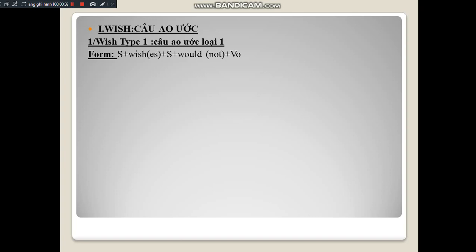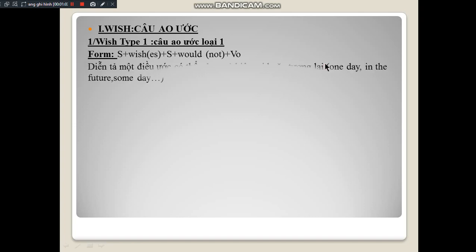Now look at the formula. Subject + wish + subject + would + verb (bare infinitive). In this formula, you can see there are two subject positions. The subject in the second clause can be the same as the first clause or a different subject. Type 1 wish clauses express a wish that could happen in the present or future. The signal words are 'one day,' 'in the future,' or 'someday.'